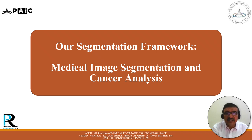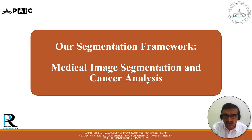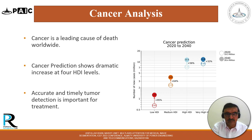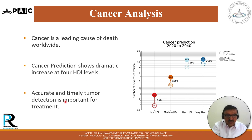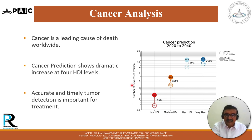The proposed semantic segmentation framework is used and tested for cancer analysis. Cancer is a leading cause of death worldwide, and cancer prediction shows dramatic increases at four HDI (Human Development Index) levels. Accurate and timely tumor detection is therefore very important. The graph shows HDI on the x-axis and cancer occurrence in millions on the y-axis, illustrating that the percentage increase at different HDI levels is quite high.